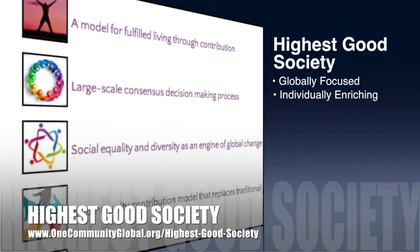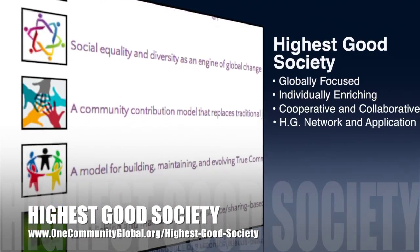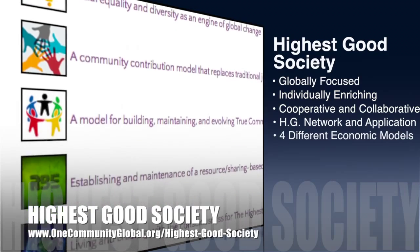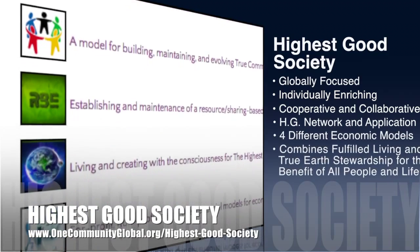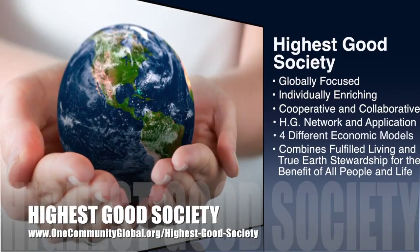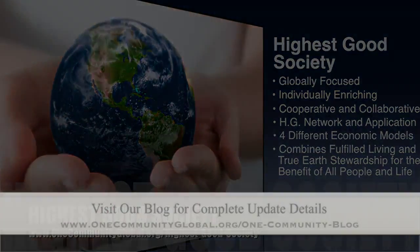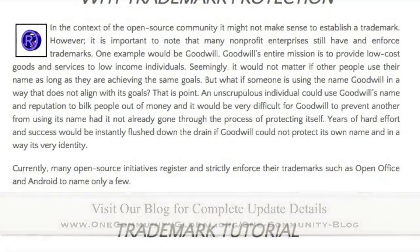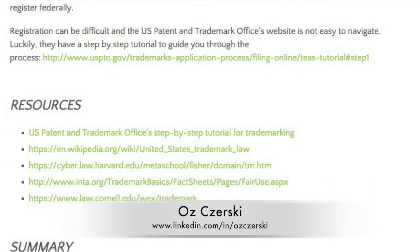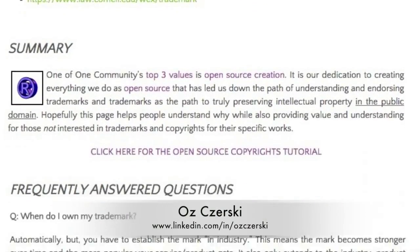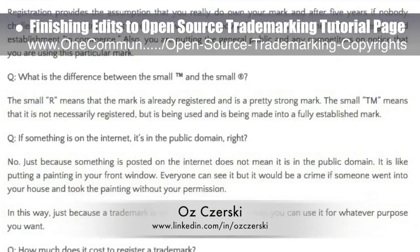The One Community approach to Highest Good Society is globally focused, individually enriching, cooperative and collaborative, includes a highest good network and application, four different economic models, and combines fulfilled living and true earth stewardship for the benefit of all people and all life on this planet. This last week, the core team continued editing and formatting the wonderful work of Oz Chersky, a lawyer specializing in trademark and copyright law, including finishing edits to the open source trademarking tutorial page.